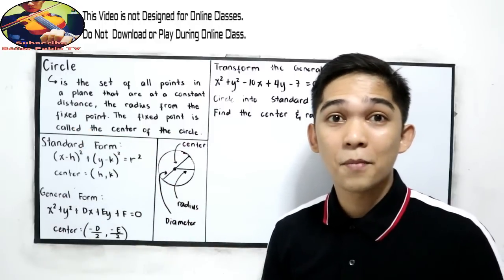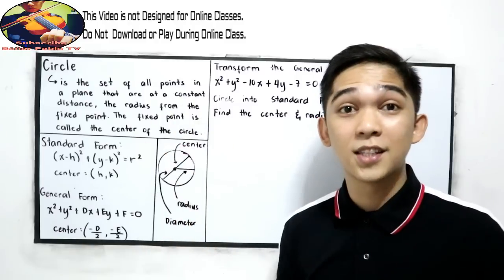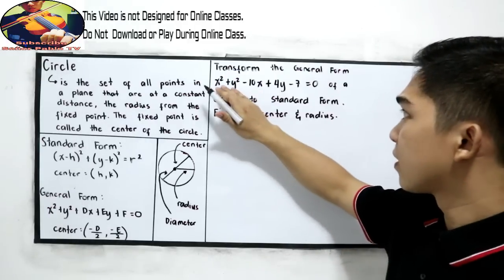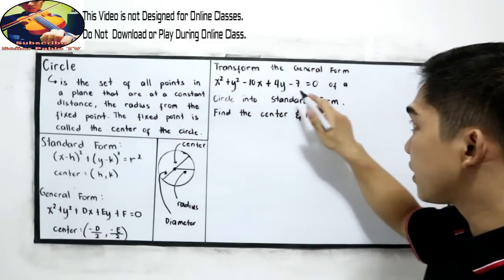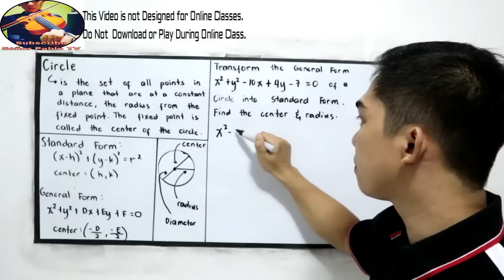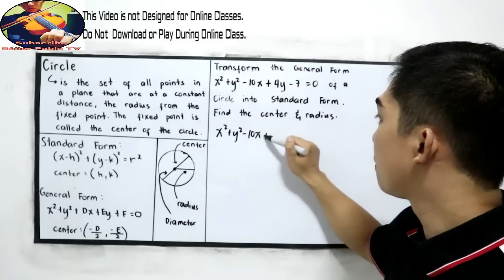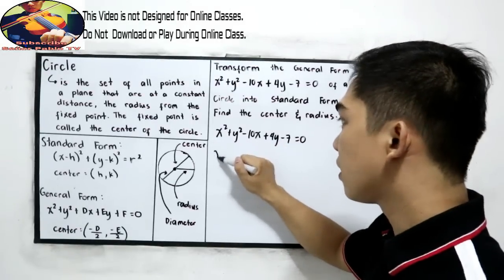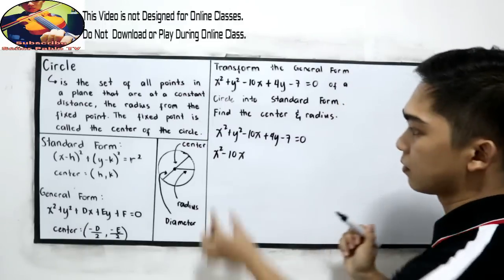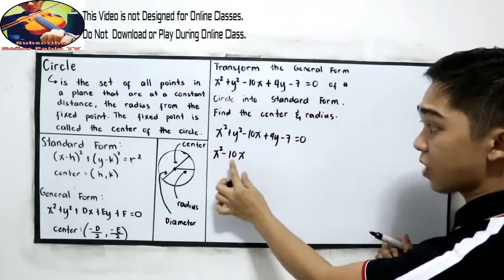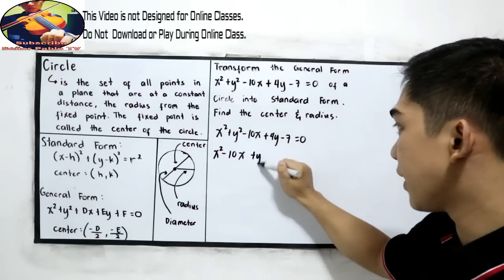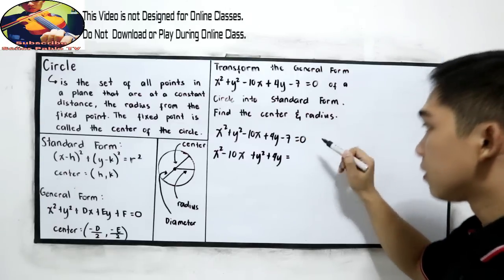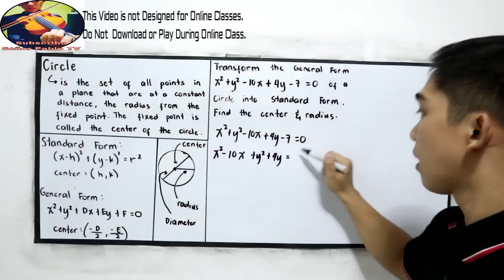We can transform by using completing the square — your lesson from Grade 9. First step: rearrange the given. The given is x squared plus y squared minus 10x plus 4y minus 7 equals 0. Rearrange so that x terms and y terms are beside each other: x squared minus 10x plus y squared plus 4y equals 7 (moving the constant to the right side).